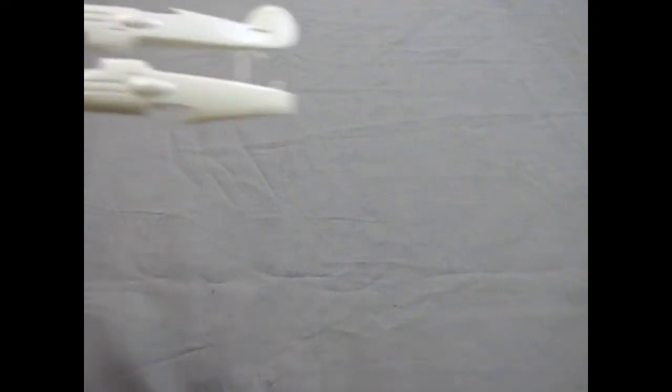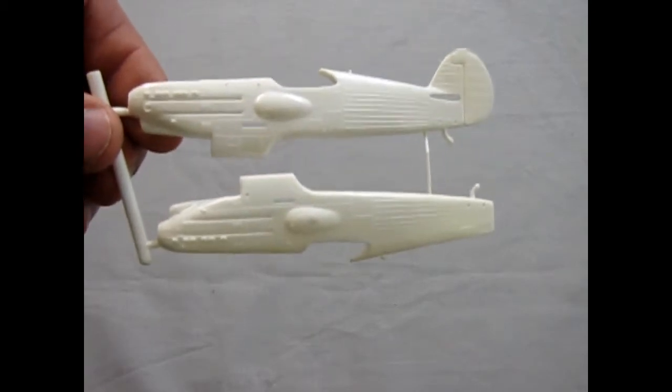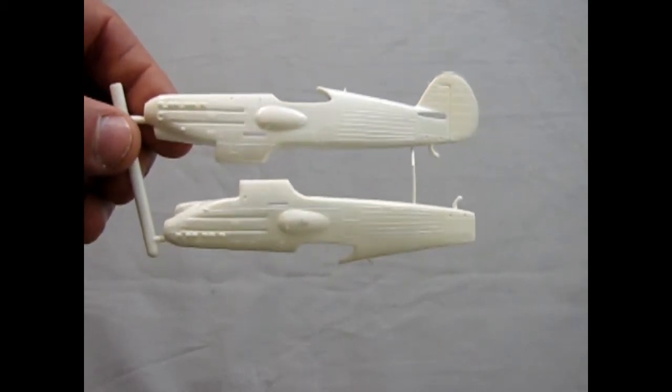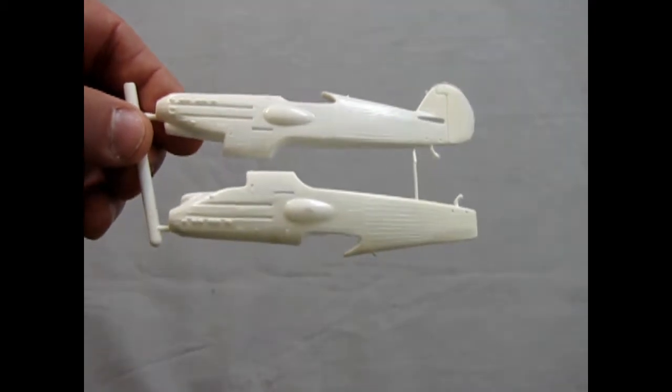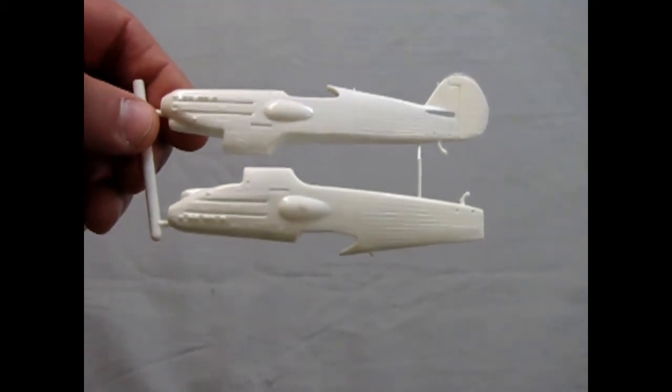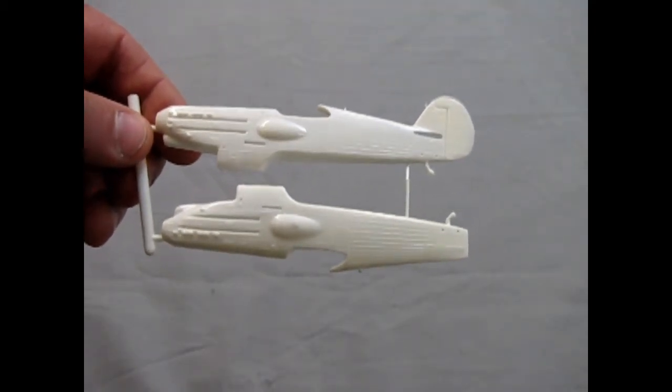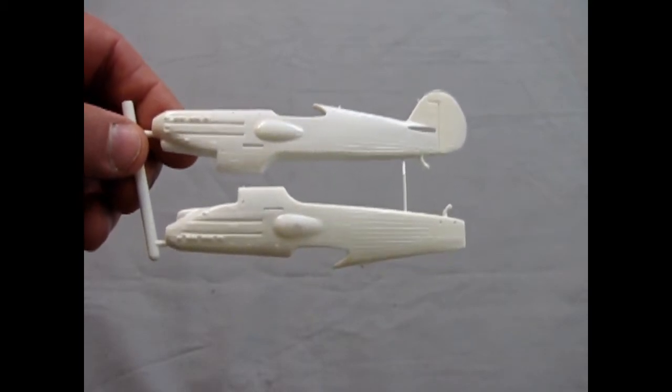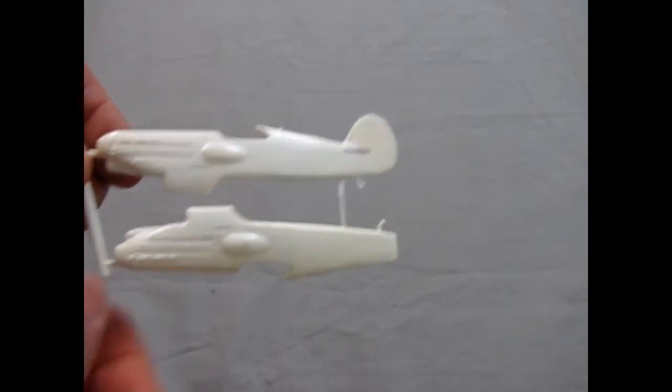Now, what makes this airplane kind of cool to me is the body. This almost looks like it could be a Spitfire or, well, not a Spitfire, but like a Hawker Hurricane or something like that. For the time period, it's a very modernized, almost World War II era body. The only thing is that it is a biplane.